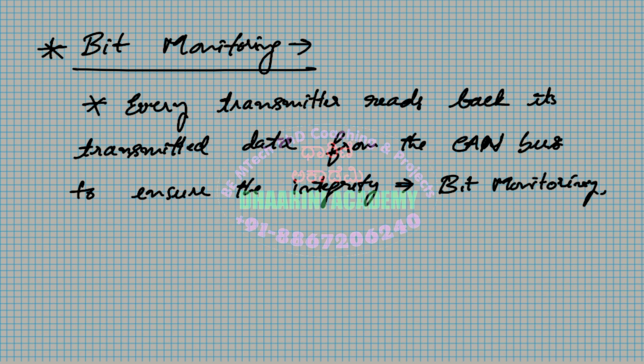CAN was considered somewhat advanced because using a single technique — bit monitoring — you achieve two jobs. Normally bit monitoring just checks that whatever you are sending is being transmitted on the CAN. But at the same time it facilitates the arbitration process: when two nodes start transmission simultaneously, both read back the transmitted bit, and the one that sent a 1 but sees 0 on the bus knows it lost and stops immediately.